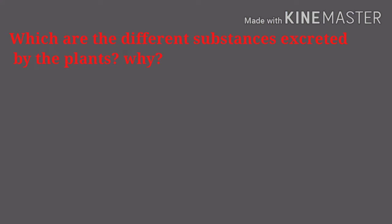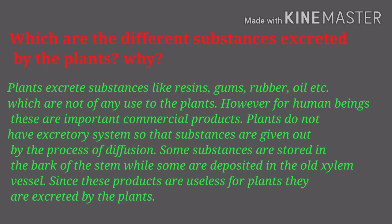Plants excrete substances like resins, gums, rubber, oil, etc., which are not of any use to the plants. However, for human beings, these are important commercial products. Plants do not have an excretory system, so such substances are given out by the process of diffusion. Some substances are stored in the bark of the stem, while some are deposited in the old xylem vessels. Since these products are useless for plants, they are excreted by the plants.